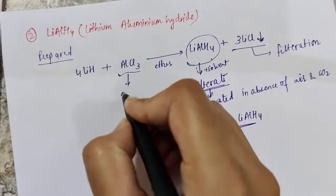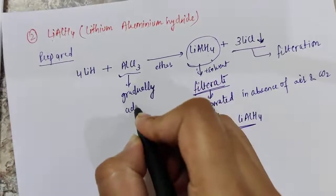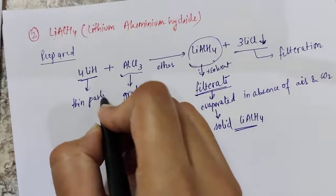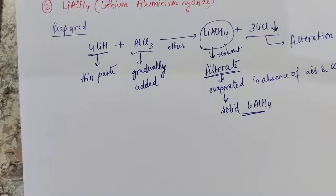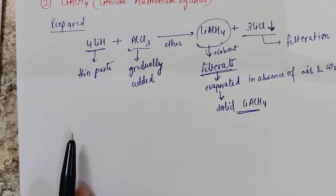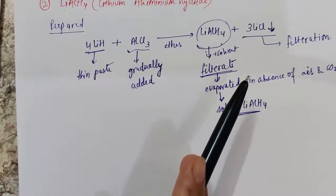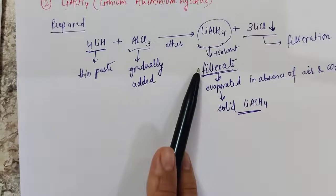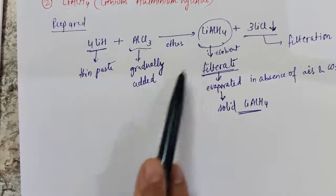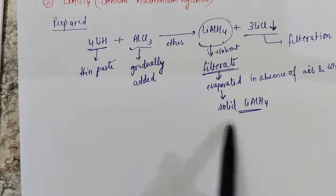To summarize the preparation: aluminium chloride is gradually added to a thin paste of lithium hydride in ether. This gives a precipitation of lithium chloride and a filtrate containing lithium aluminium hydride, which is separated by evaporating the filtrate in the absence of air and CO₂ to obtain the solid reagent.